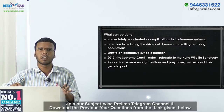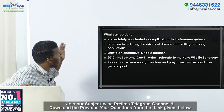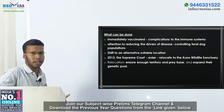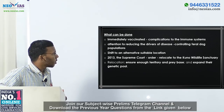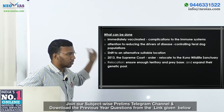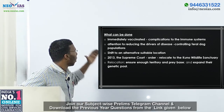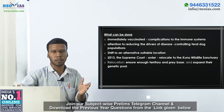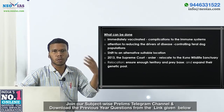To protect Asiatic lions, the first step is immediate vaccination, though there are concerns about possible complications to the immune systems of lions. So vaccination can be a short-term solution. For a long-term solution, we can consider translocation — relocating the lions from Gir National Park to another suitable location.